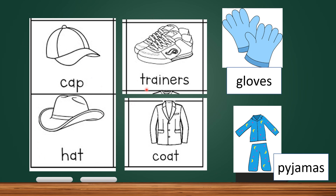The third one is trainers. Trainers. T-R-A-I-N-E-R-S. Trainers is a word derived from 'training shoes' and refers to shoes for people to wear during running or other sports activities. So next time you can say that you wear trainers when you go exercising.